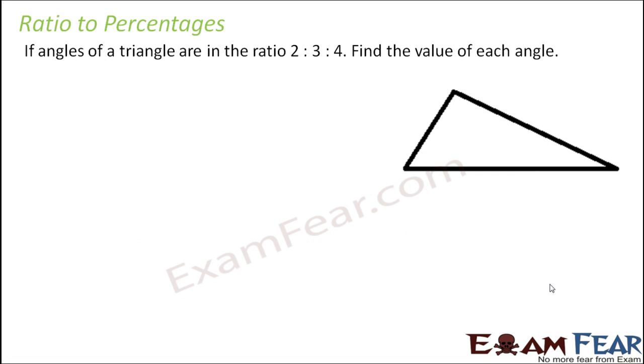So let us look at this real life example. If the angles of a triangle are in the ratio 2 is to 3 is to 4, which are the angles of the triangle? So these are the three angles of the triangle. They are in the ratio 2 is to 3 is to 4. What does that mean? That means that if we assume that the value of this angle is 2x then the value of this angle would be 3x and the value of this angle would be 4x.